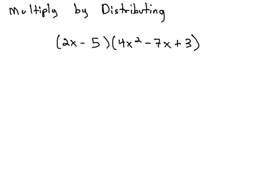Here, we're multiplying 2x minus 5 times 4x squared minus 7x plus 3. Since we have this 2x minus 5 in front of parentheses, we're going to distribute it onto each term.